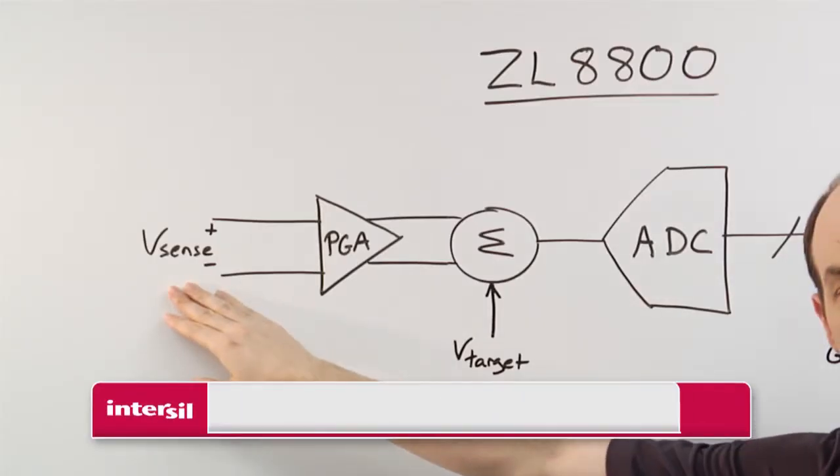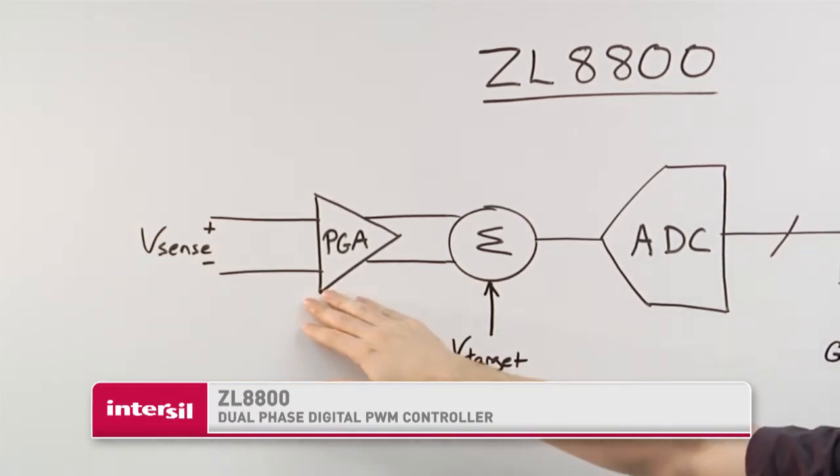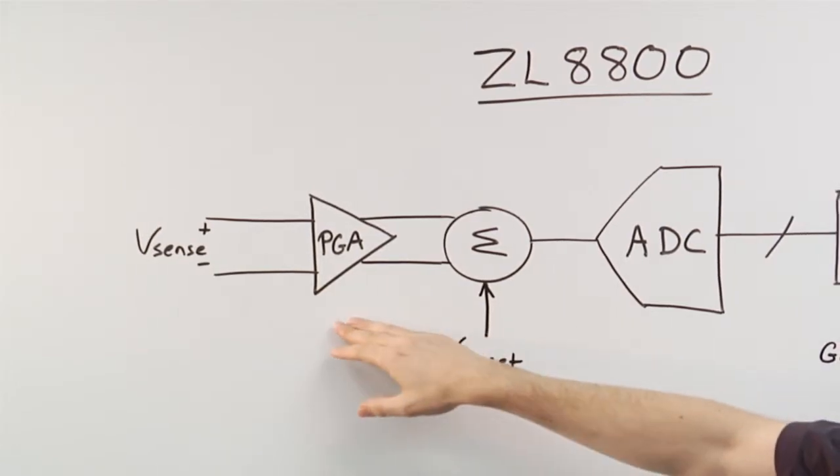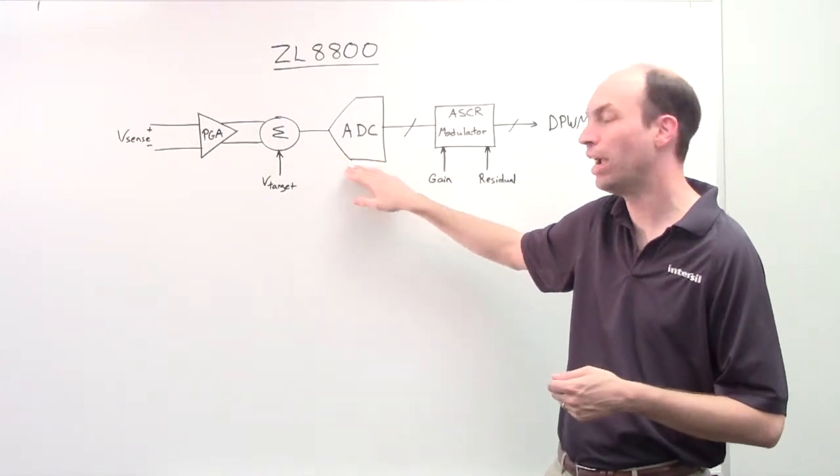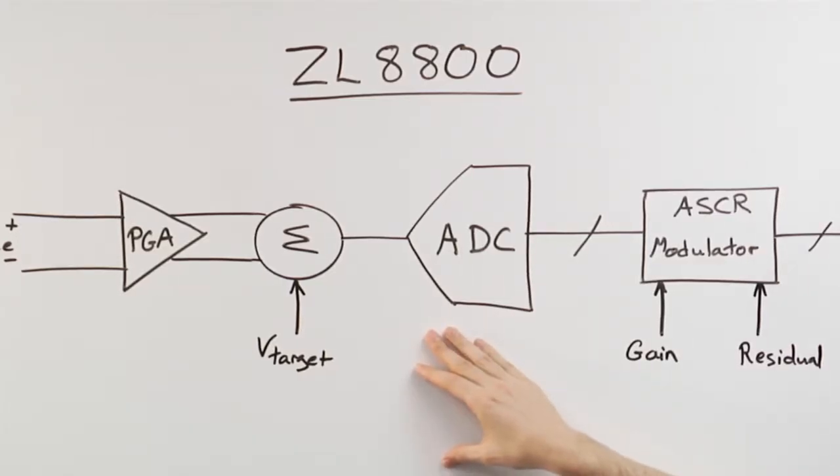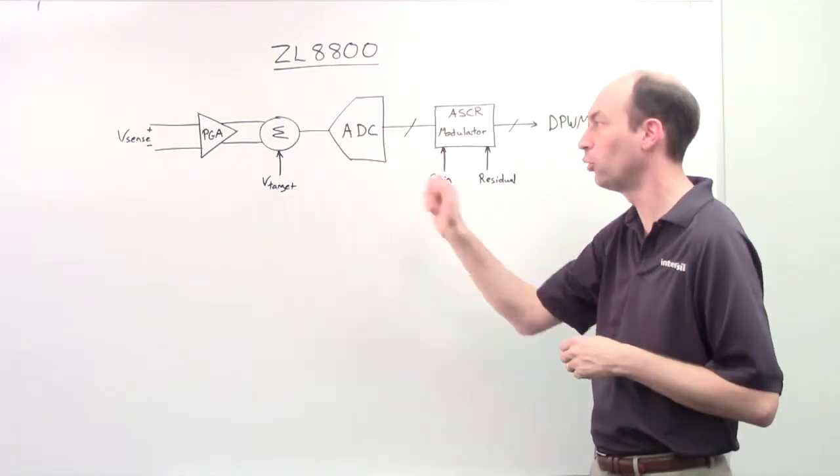The output voltage ascents differentially and comes back into the device. The first stage we use is a programmable gain amplifier, which is automatically set up for the device. We're comparing it against the target output voltage before we go into our ADC, so we're only going to be quantizing the error voltage. This is a high bandwidth fast transient response, so we're only looking at the relative error for regulation.